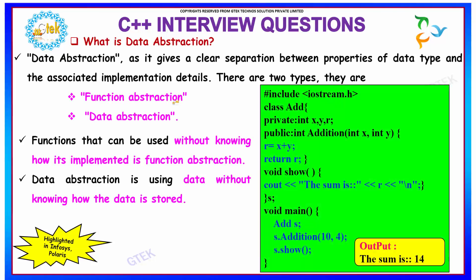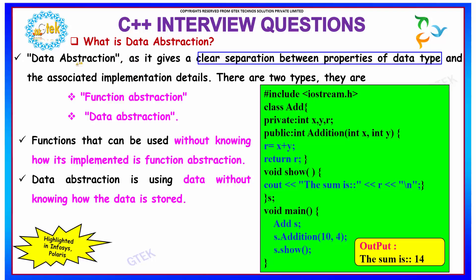What is meant by data abstraction? Data abstraction gives a clear separation between the properties of a data type and the associated implementation details.